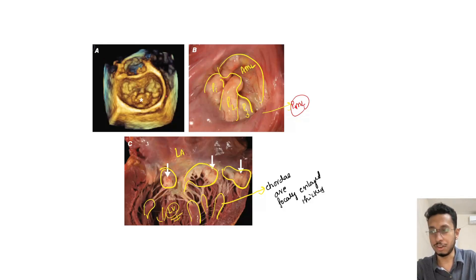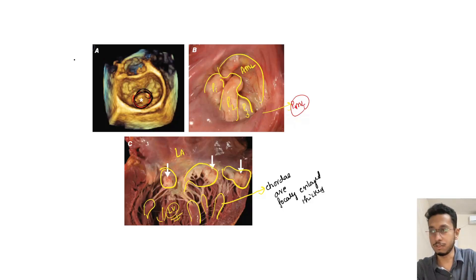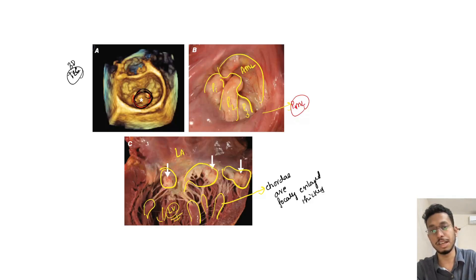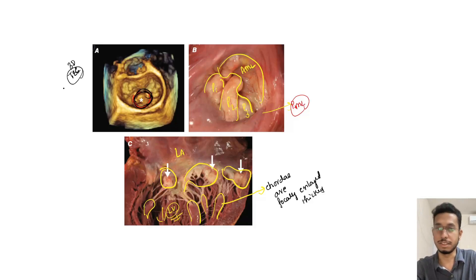There is billowing and prolapse of the anterior and posterior mitral leaflets. This is a 3D transesophageal echocardiographic image showing the mitral valve, which helps guide mitral valve surgery intraoperatively during mitral repair.